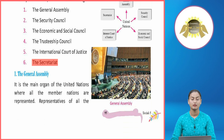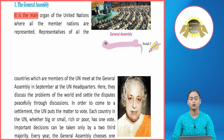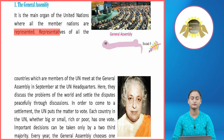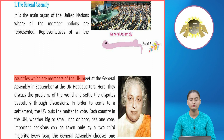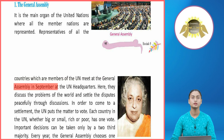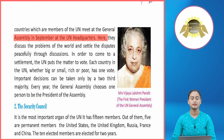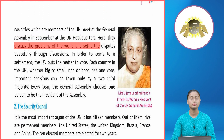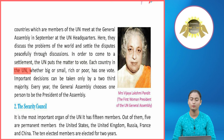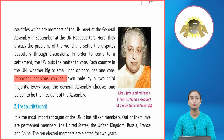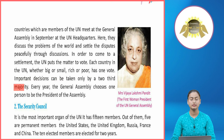The General Assembly is the main organ of the United Nations where all the member nations are represented. Representatives of all member countries meet at the General Assembly in September at the UN headquarters to discuss world problems and settle disputes peacefully through discussions. To reach a settlement, the UN puts the matter to vote — each country, whether big or small, rich or poor, has one vote. Important decisions can be taken only by a two-third majority.